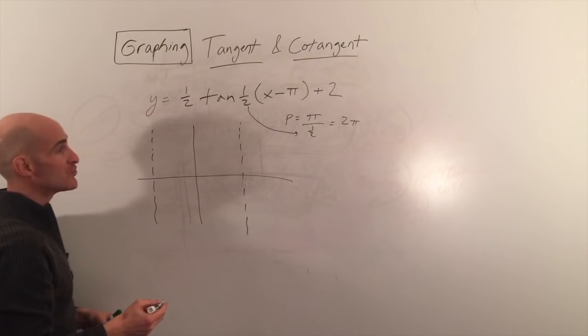The pi over 4 term shifts the graph right pi over 4. On our scale of pi over 8, that's two units to the right. First reflect the graph over the x-axis, then shift all points and asymptotes two units to the right. The resulting graph goes up to the right because of the reflection.